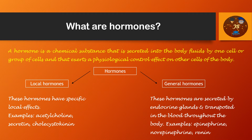General hormones are different from local hormones. These hormones are secreted by the endocrine glands and transported via the blood throughout the body — they are distributed to all parts of the body. Examples include epinephrine, norepinephrine, and renin. We will learn about these hormones in detail in the coming videos.